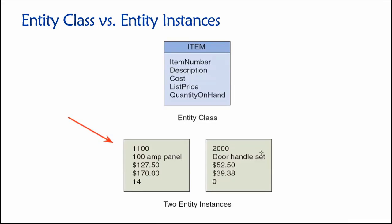Down here, we can see a couple of examples of entity instances. They all just conform to this general framework or design that we created above. So this is an item. This collection of attribute values is an item, as is this one. And of course, we can map these up to their attributes. This will be our item number. This is a 100-amp electrical panel. So that would be the description. And you can see our cost for it is $127.50. We charge $170 to our customers for this, and we have 14 of them in inventory. So these all just map up here to attributes.